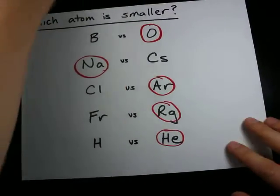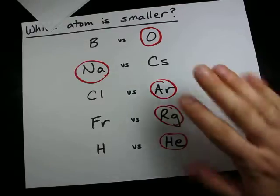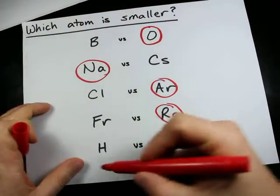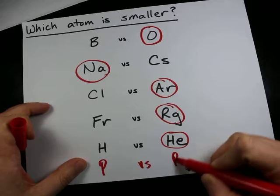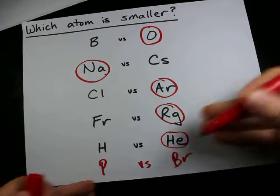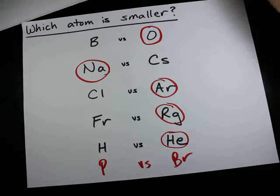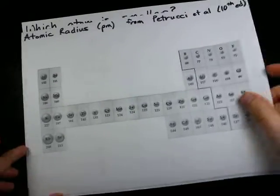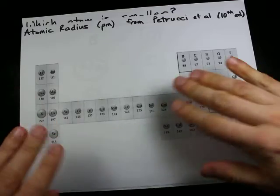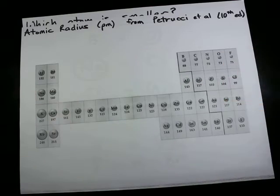Alright, one thing I do want to point out is that I specifically didn't ask any confusing questions, like phosphorus versus bromine, where we're changing both the row and the column. And that's because it is not the case that the number of shells always outweighs the number of protons or whatever.